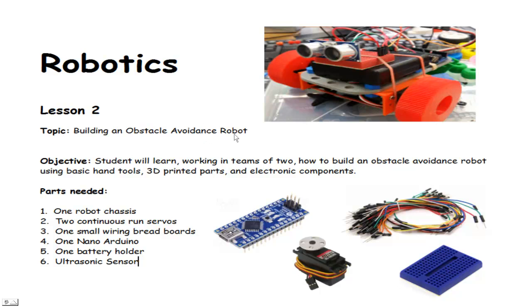We're building the obstacle avoidance robot. This time we're just going to take the parts. Student objectives: we'll learn, working in teams of two, how to build an obstacle avoidance robot using basic hand tools, 3D printed parts, and electronic components. These components were obtained on eBay, pretty inexpensive.